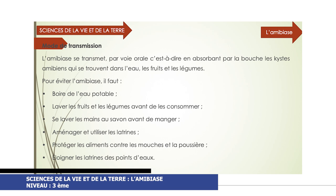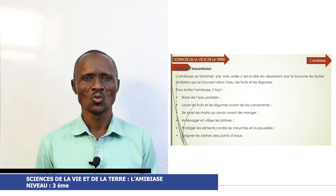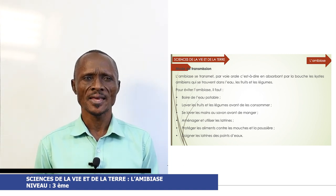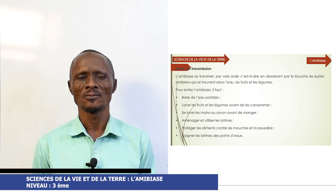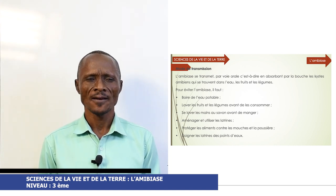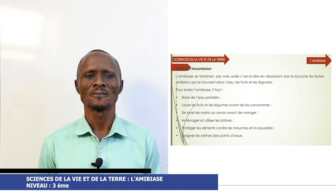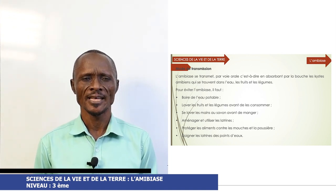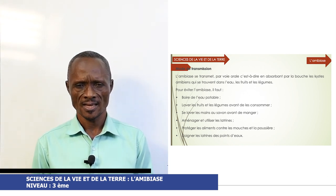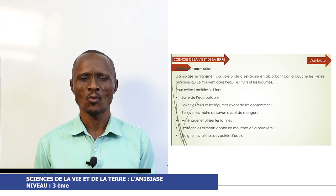Mode de transmission. L'amibiaz se transmet par voie orale, c'est-à-dire en absorbant par la bouche des kystes amibiens qui se trouvent dans l'eau, les fruits et les légumes. Pour éviter l'amibiaz, il faut boire de l'eau potable, laver les fruits et les légumes avant de les consommer, se laver les mains au savon avant de manger, aménager et utiliser les latrines, protéger les aliments contre les mouches et la poussière, éloigner les latrines des points d'eau.